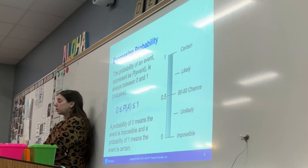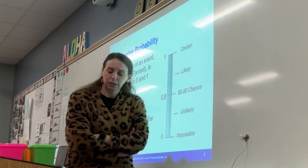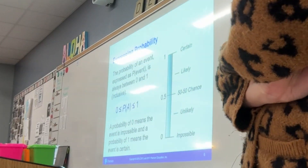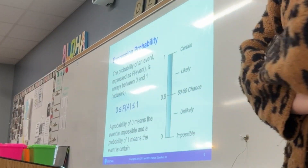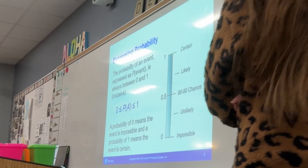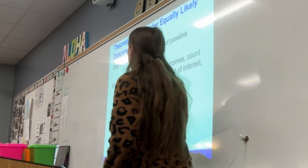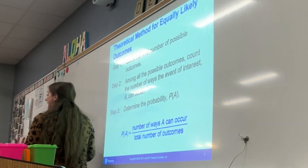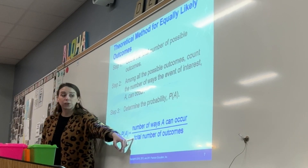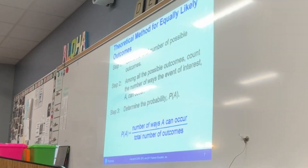What's the probability of Mrs. Dean going to the moon? Zero — it is impossible. I'm too old for that. What is the probability that Mrs. Dean is going to yell at you guys today? One — certain. Definitely going to yell at you guys. So our formula: the probability of event A is going to be a fraction — the number of ways it can occur over the total number of outcomes. That's what we're looking at when we're talking about theoretical probability.